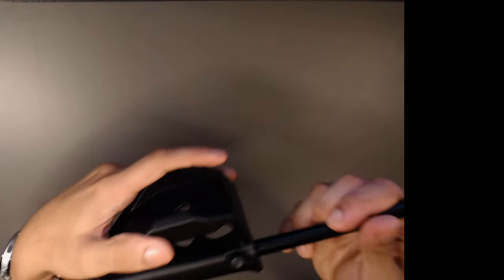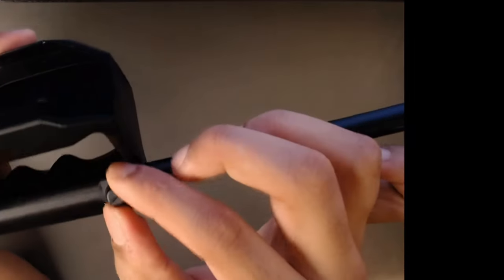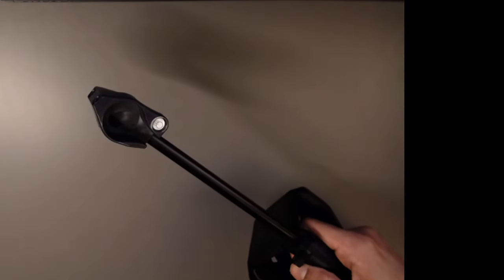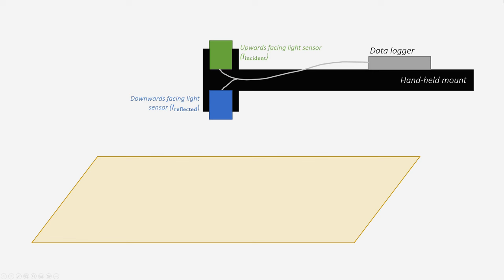For the albedometer and NDVI sensors, we need our handheld sensor mount to hold the upwards and downwards facing sensors simultaneously. The sensor mount is screwed into the top of the metal rod. Then, the metal rod screws into a 3D printed grip and is held in place by a set screw. There is also a small bubble level on the handheld mount to keep it horizontal.